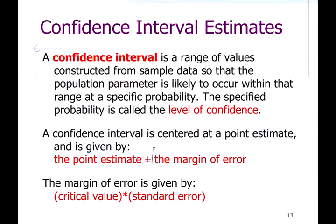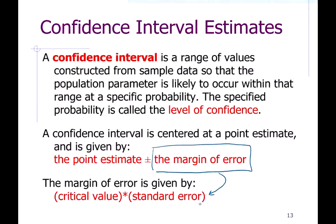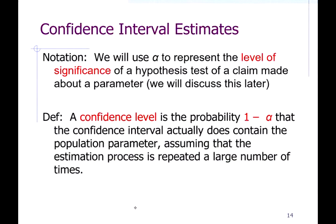The margin of error comes from the formula: the critical value — the z-score — times the standard error. I'll talk about what the standard error is a little later. That alpha subscript on the z-score is called the level of significance. There's a relationship between confidence and significance: confidence equals one minus significance, or significance equals one minus confidence. They add up to one.